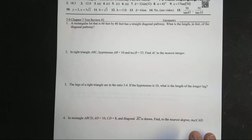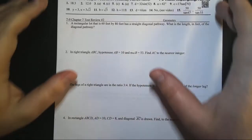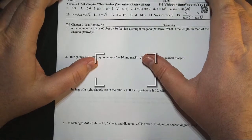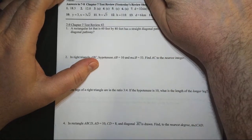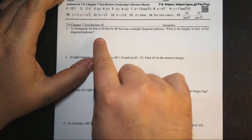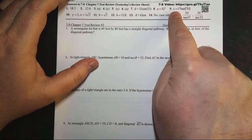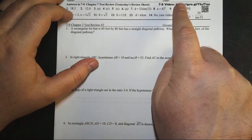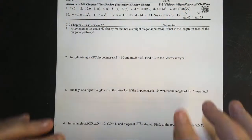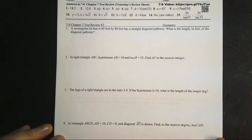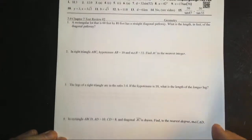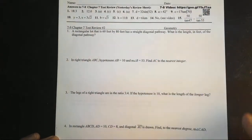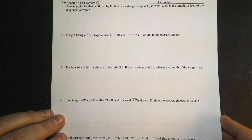Alright, what is up — we are doing worksheet review number two. The stuff up top is from the first review sheet, those are the answers to that one so you can go through and do that on your own. There's a link to the video and QR code for the solutions, and I'll post this one when we're done.